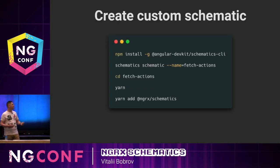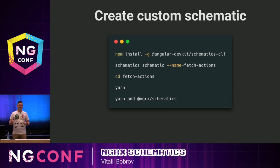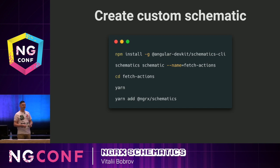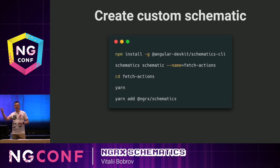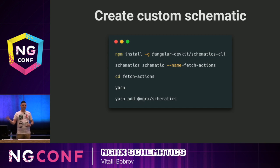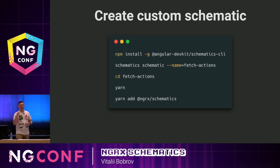So to create custom schematics, first of all we're going to set up the schematics CLI globally. The schematics CLI provides us with this handy command called 'schematics'. Then we're going to specify templates for our new schematic, which is also called 'schematic'. We're passing our schematic collection name — in our case it will be 'fetch-actions'. Then we move to our newly created folder, set up all dependencies using Yarn or NPM, and then we add NGRX schematics as a dependency, because we're going to use their codebase and just provide our own template.